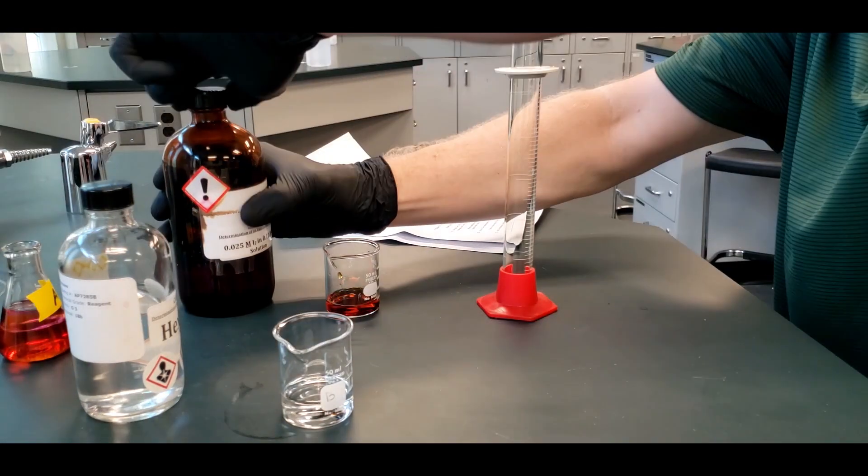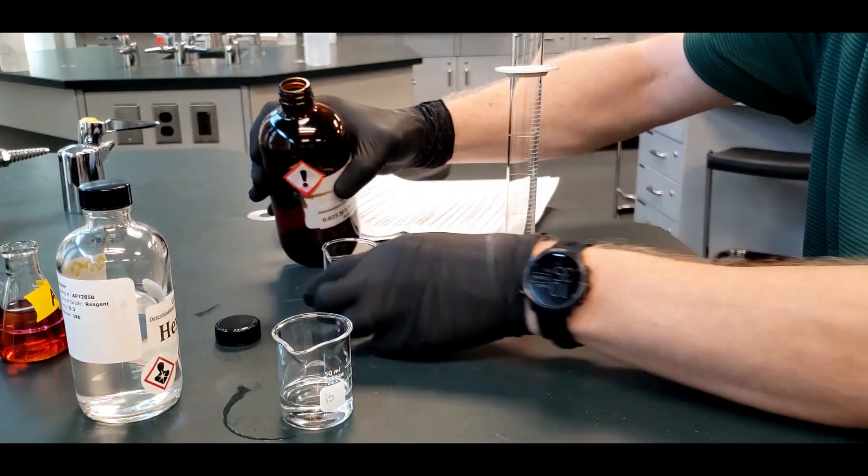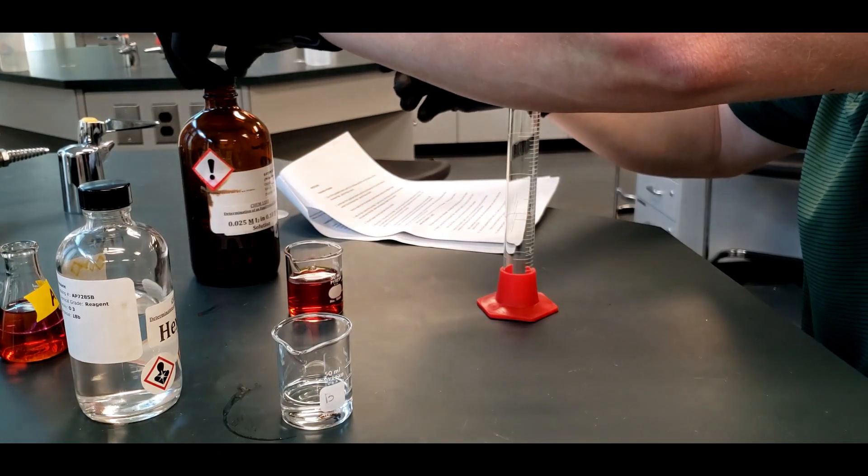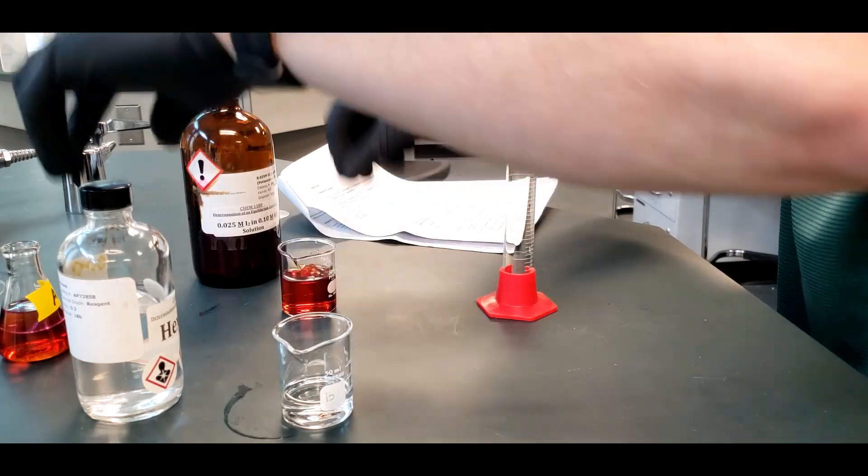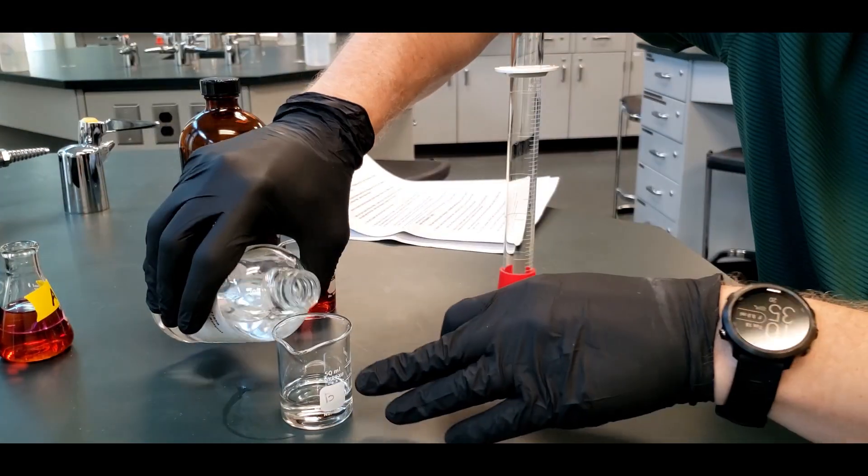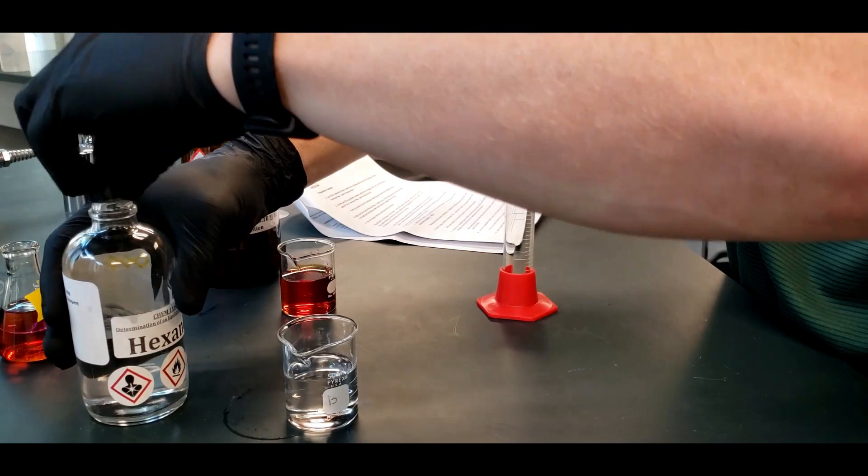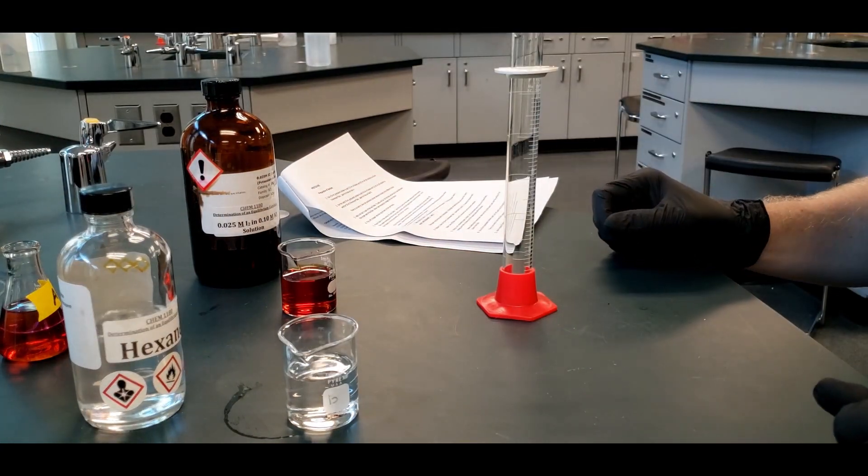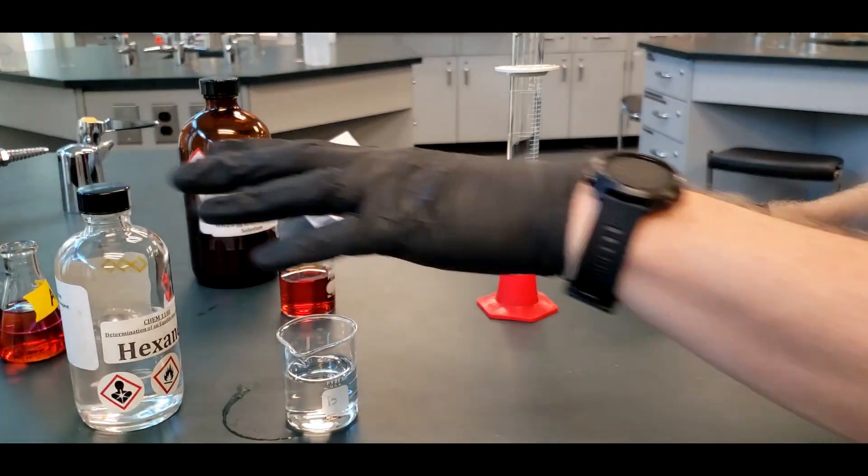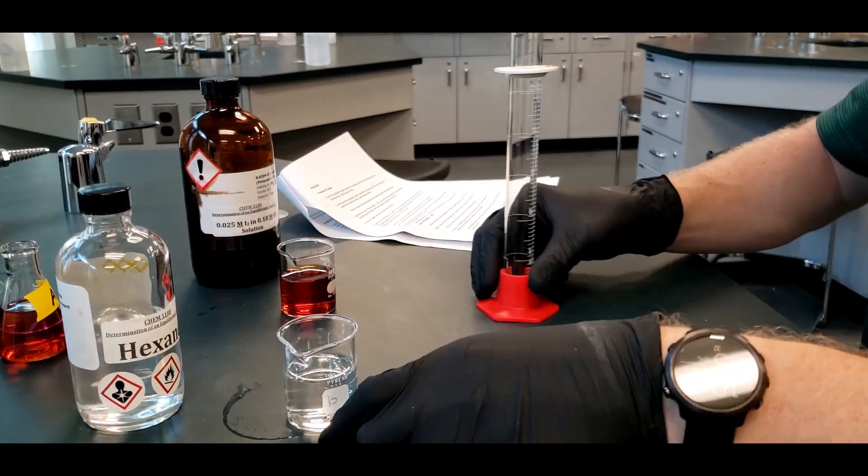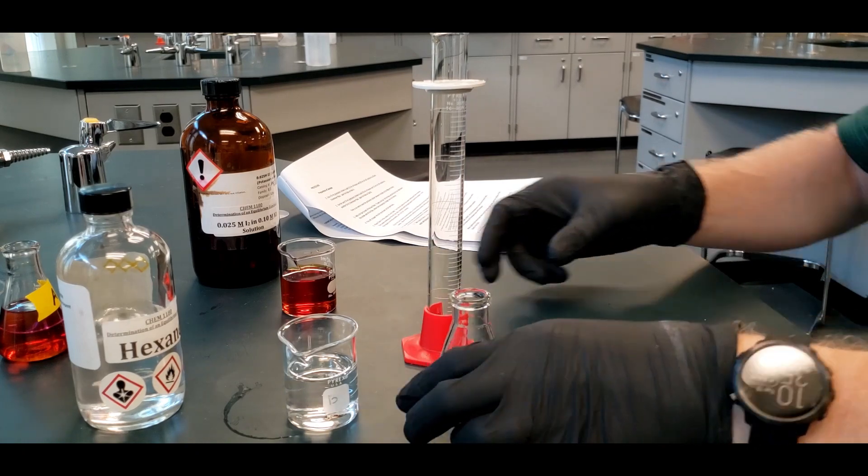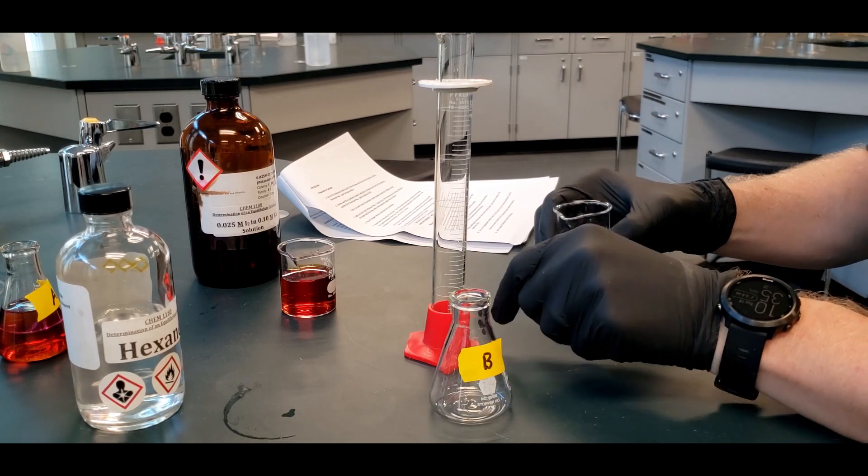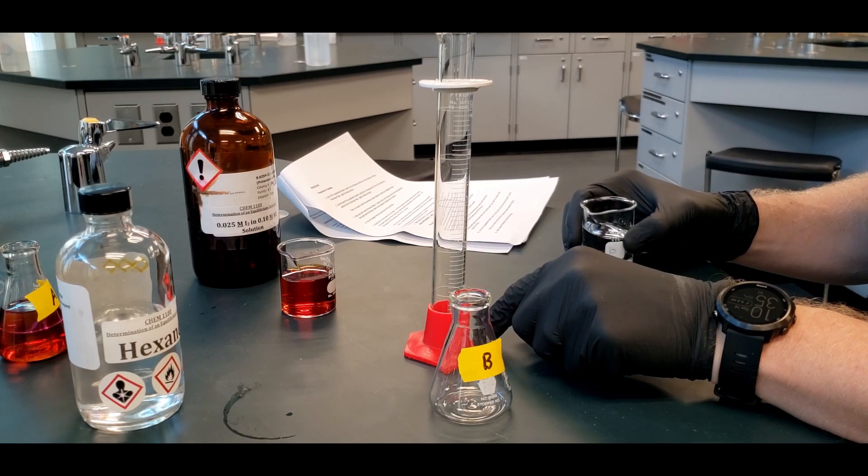Put this over here, and we'll pour out a bit more of the iodine iodide, and then I suspect we need some hexane as well. So we did 15 mL of the hexane, 30 mL of the iodine potassium iodide, and now we're going to do 30 and 15.